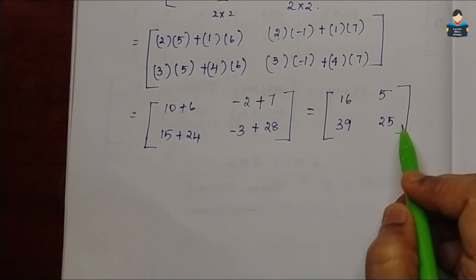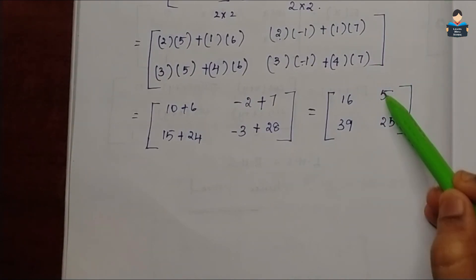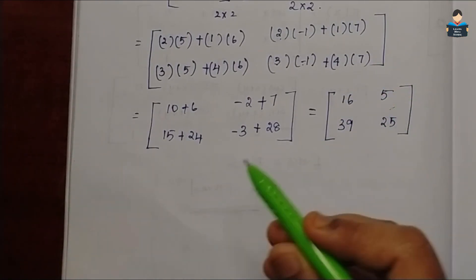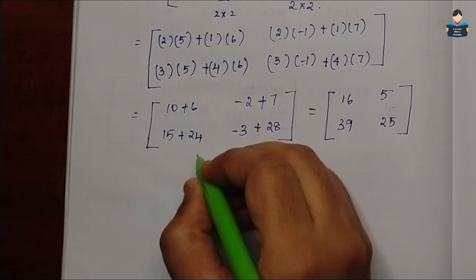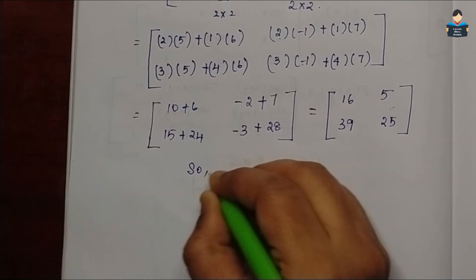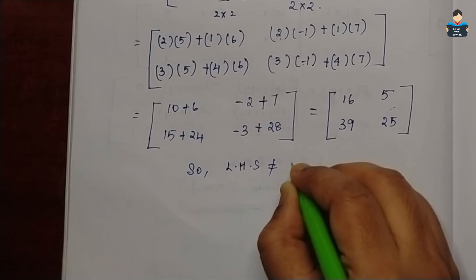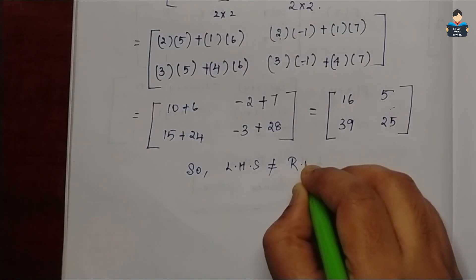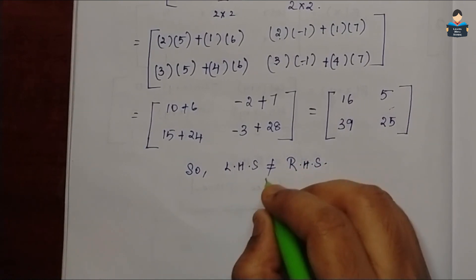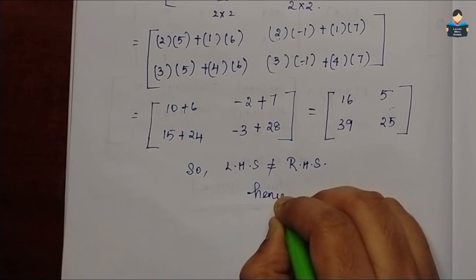Here we can see the LHS part and the RHS part are different. So LHS is not equal to RHS. That is what we needed to prove — hence proved.